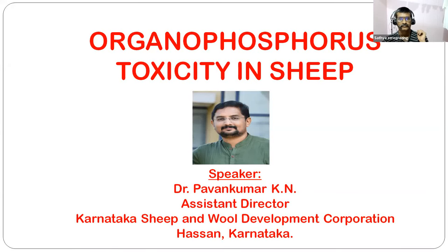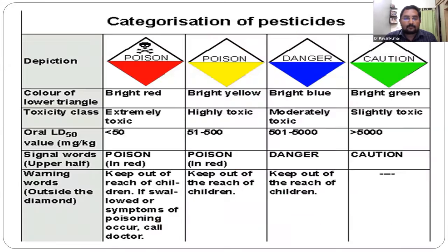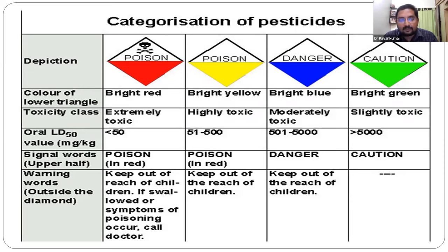I am talking about the organophosphorus toxicity affecting the sheep. You might have seen the labels on pesticide bottles, sachets and bags - the bright red color, the word 'poison,' and the skull labeling. Our class of pesticide, the organophosphorus pesticide, belongs to this red color depiction, meaning consumption of this pesticide is extremely toxic and poses a serious health hazard to animals.